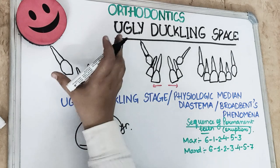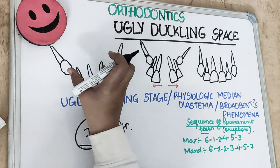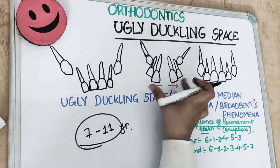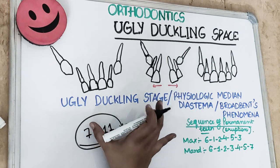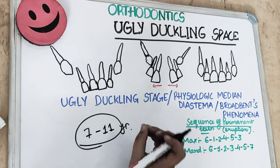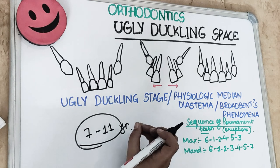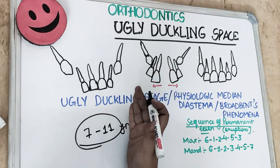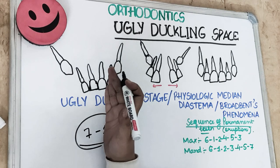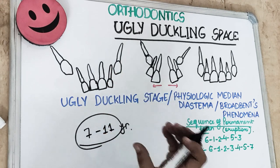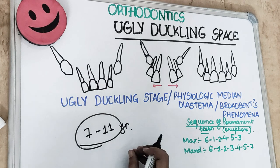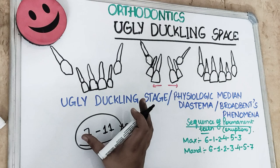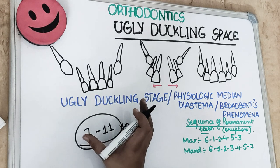When the permanent canines are erupting, they displace the roots of the central incisors, creating a midline diastema. The ugly duckling stage is a transient malocclusion wherein the midline diastema is created between the central incisors. It is not a permanent malocclusion — it is temporary and transient. That's why the ugly duckling stage is also known as a self-correcting malocclusion.